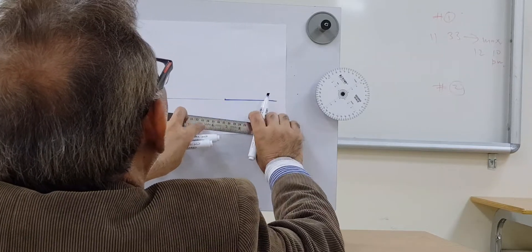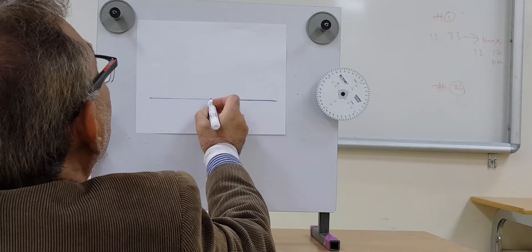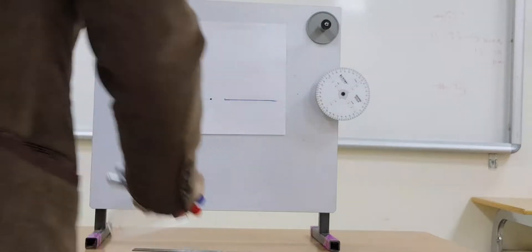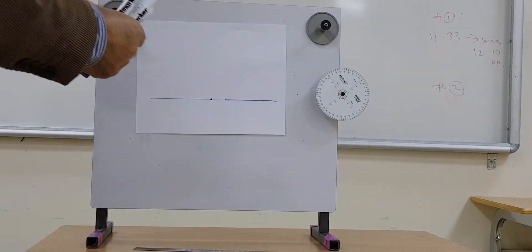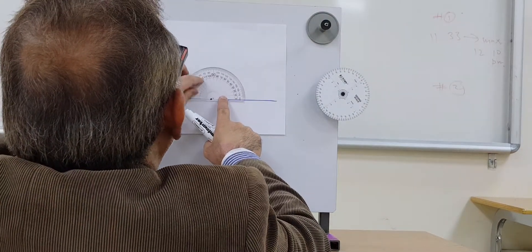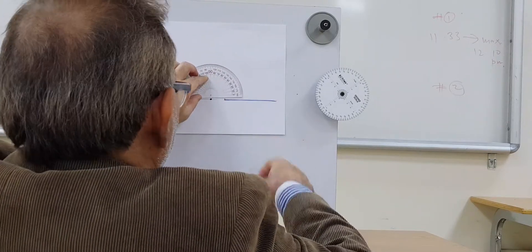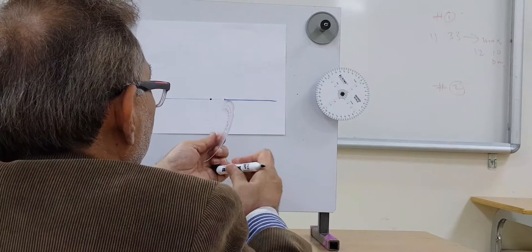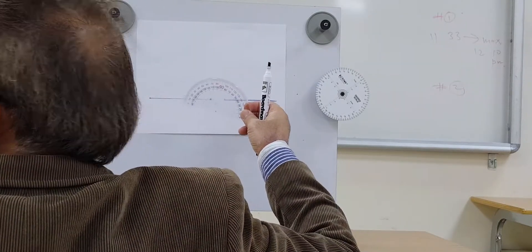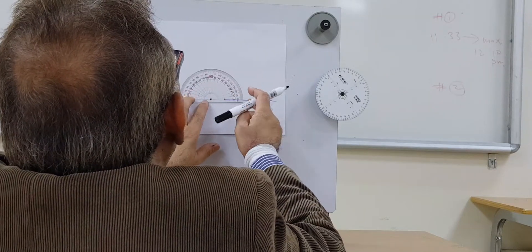Like this, and the center here for the degree scale. This is your degree scale. And then its center here, this is the horizontal line. Draw theta 1. Theta 1 is 35 degrees, so I draw it like this.